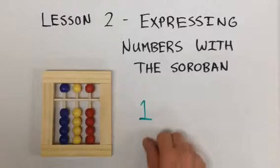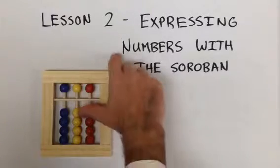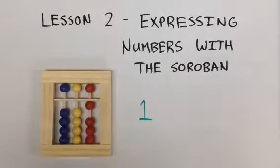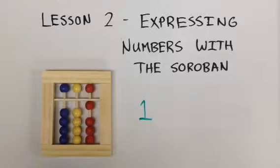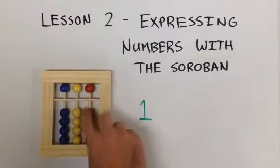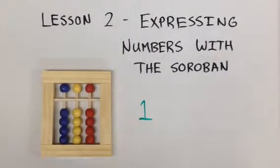To express the number 1, we take our thumb and move one bead to the answer line. This is the number 1. Then we take our pointer finger and bring us back to 0.